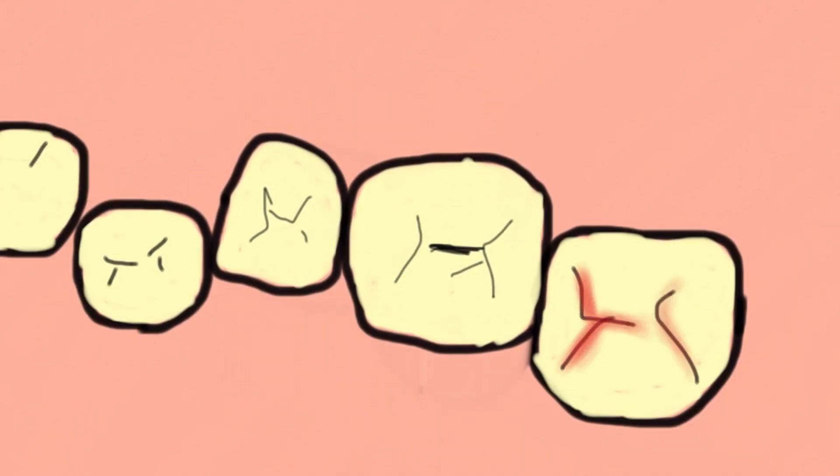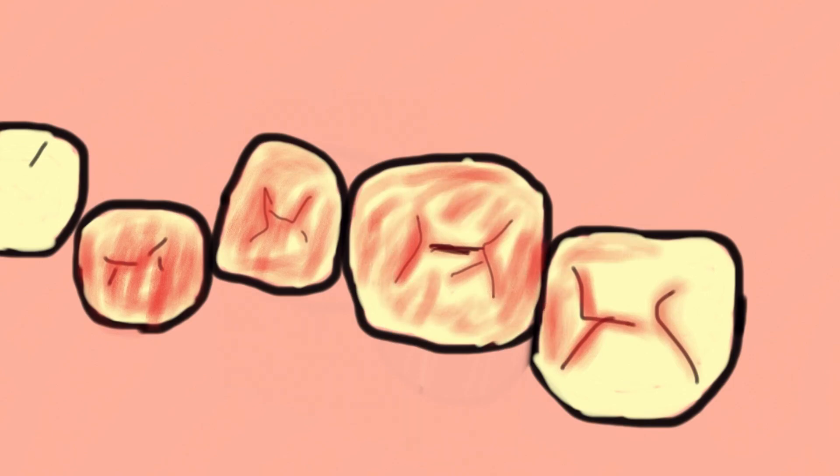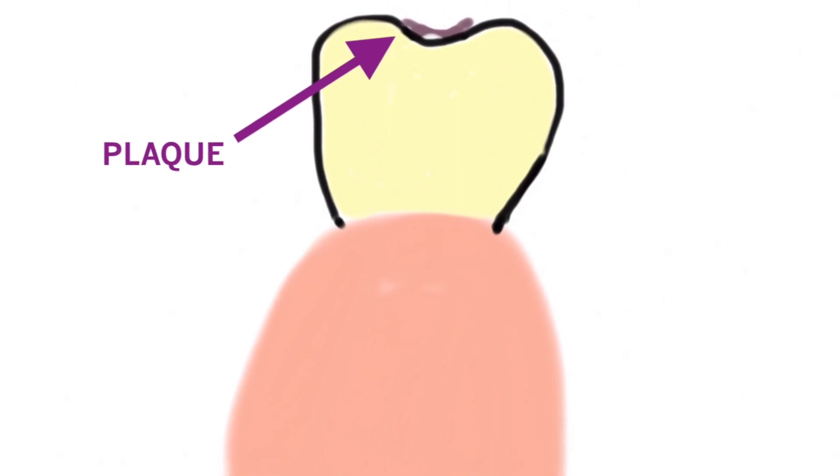The back molar teeth have grooves that we call fissures, and it's this area where plaque accumulates and the teeth can start to decay. Often what we do is coat the teeth with fluoride when you come to see us to help strengthen the tooth.